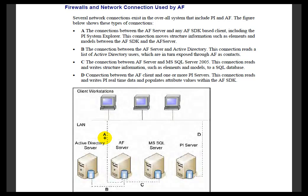What we're identifying here are the different components and the different things you may have to open up given a specific firewall in a certain location. For example, if you look at Scenario A here, we're talking about connections between the AF Server and any AF SDK-based clients. We're depicting this in the picture showing an AF Client over here and the AF Server right here. This dotted line in blue indicates that's what we mean by Scenario A.